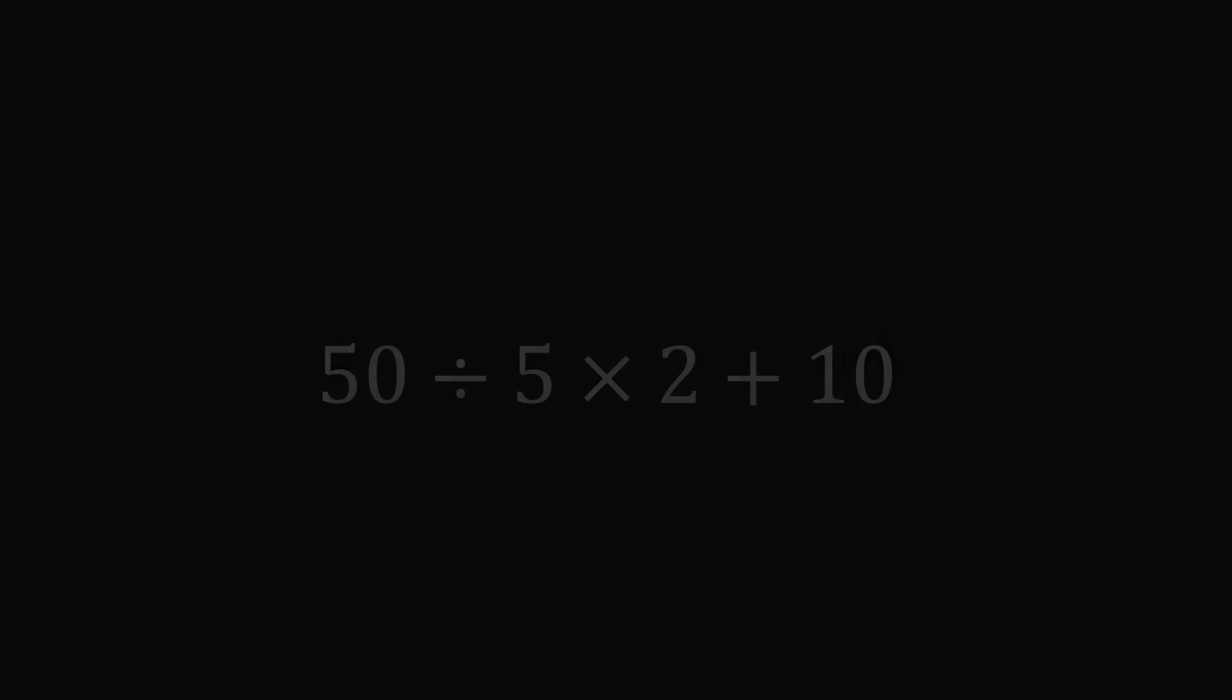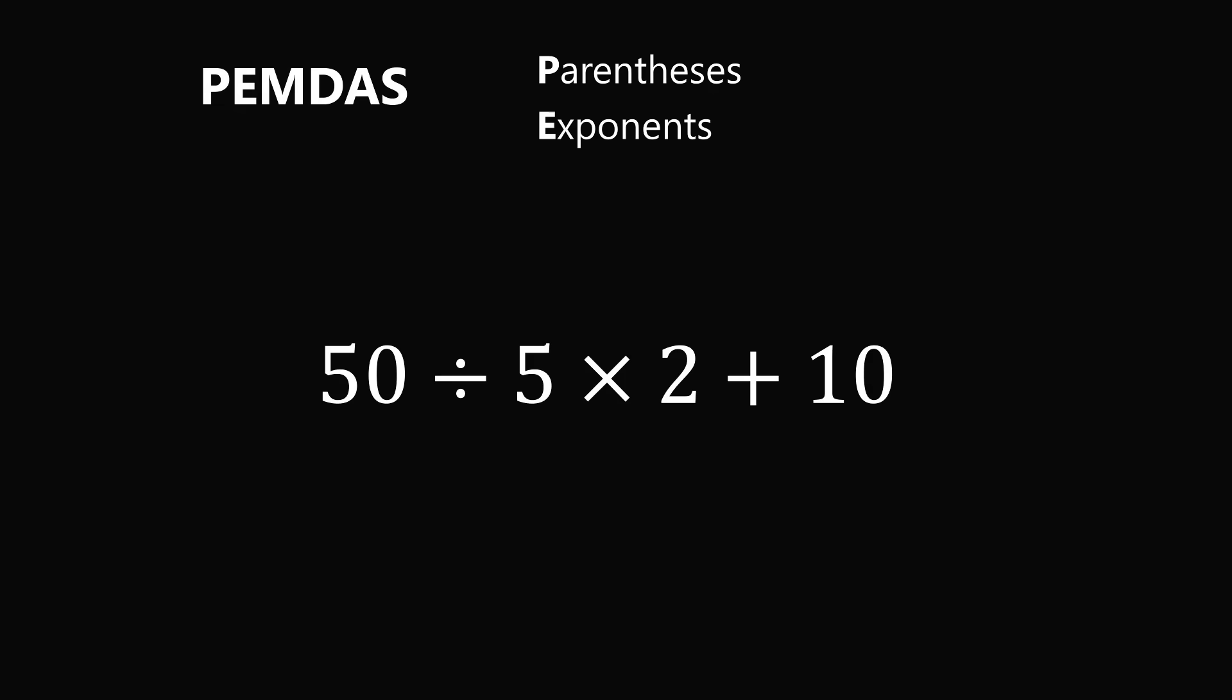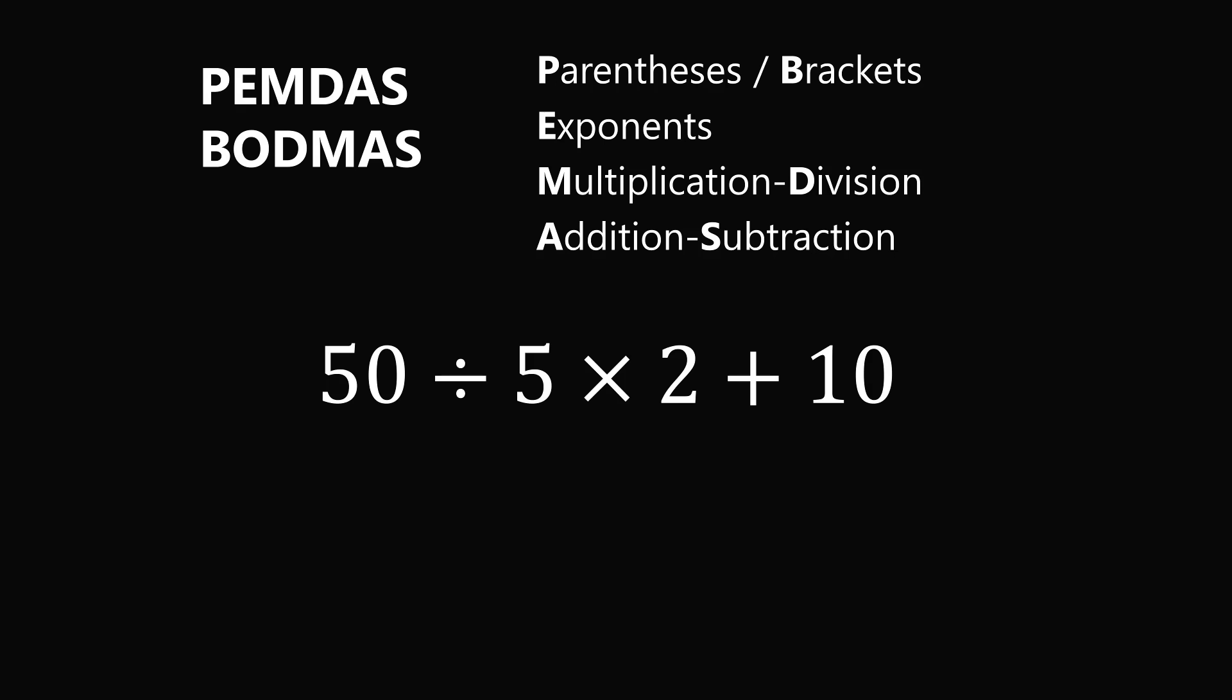So what is the correct answer to this question? We can evaluate it using the order of operations, which is commonly referred to as PEMDAS. This refers to evaluating parentheses first, then exponents, multiplication and division, and finally addition and subtraction. It is also remembered by the acronym BODMAS, where parentheses has the corresponding brackets and exponents has the corresponding orders.